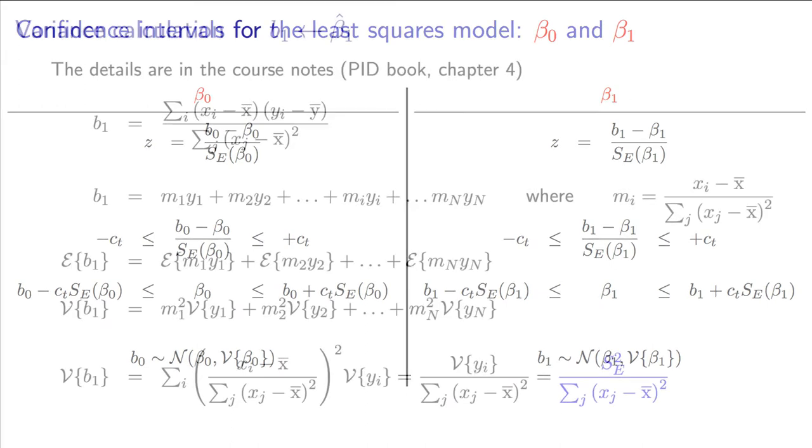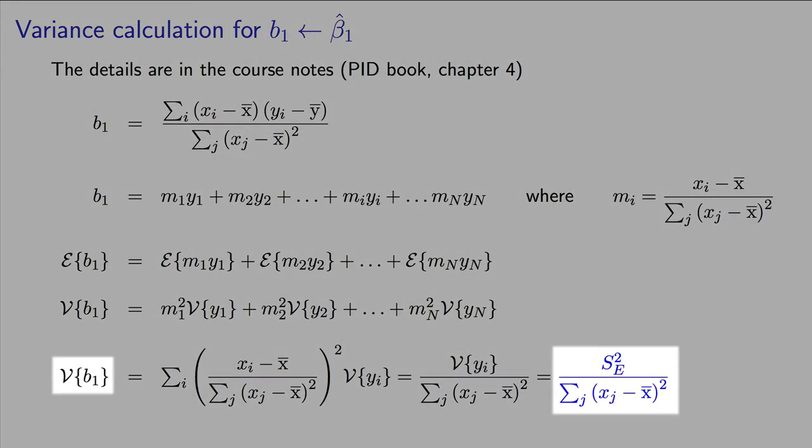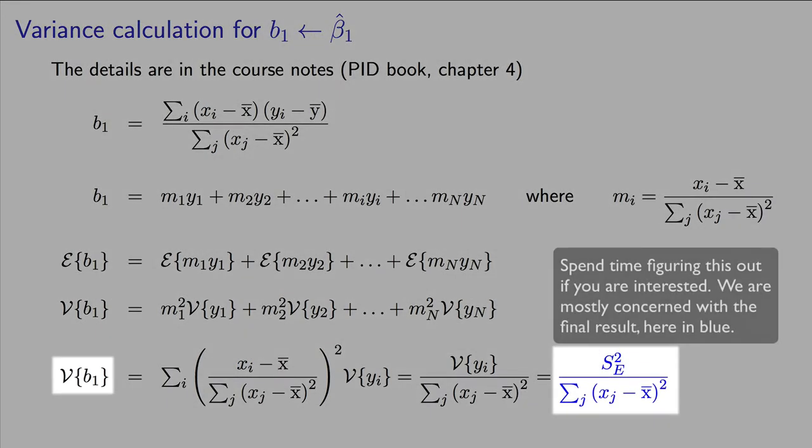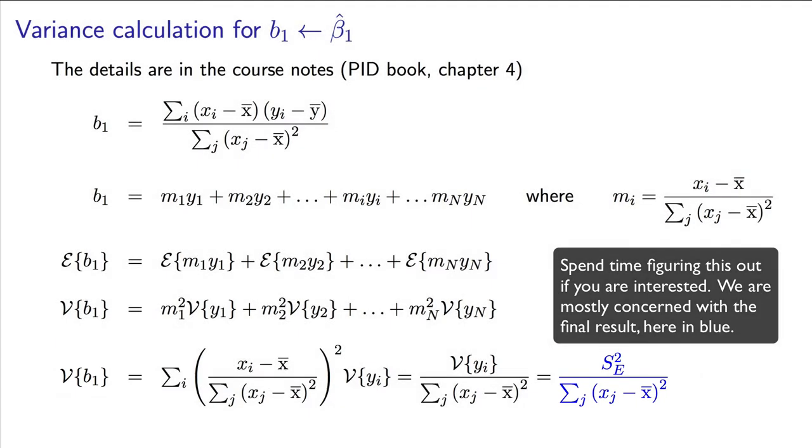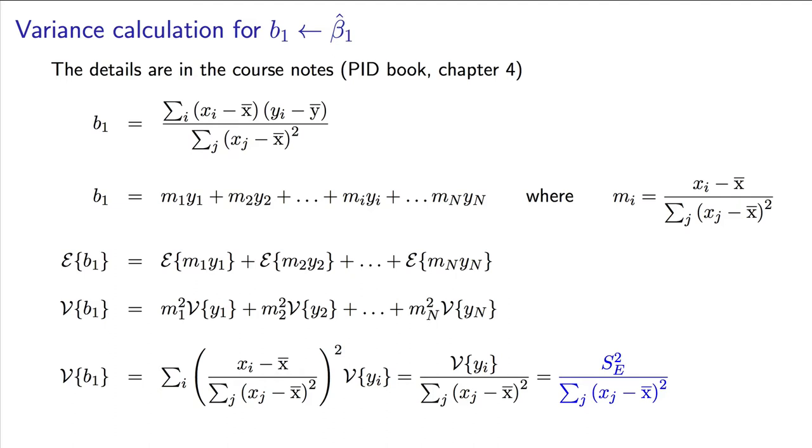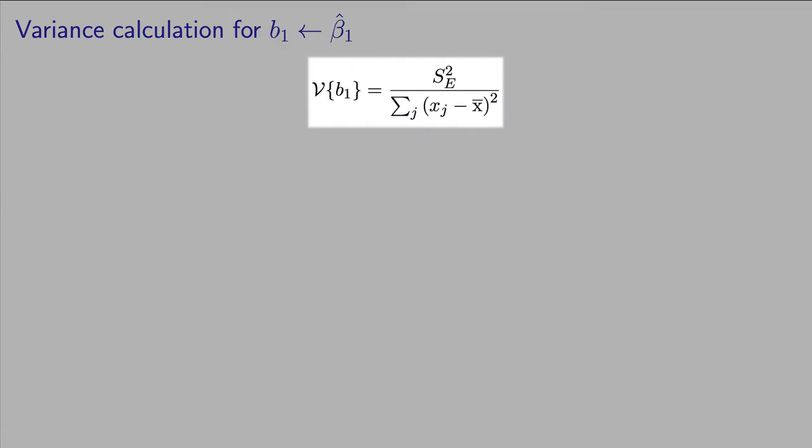The derivation for the variance of beta 1 is fairly straightforward. It builds on a number of expectation and variance formula properties we had seen in a prior video, as well as a clever rearrangement of the equation that calculates the b1 slope coefficient estimate. Once you sub in the formula for the variance estimate, we can derive this equation shown here on the screen.